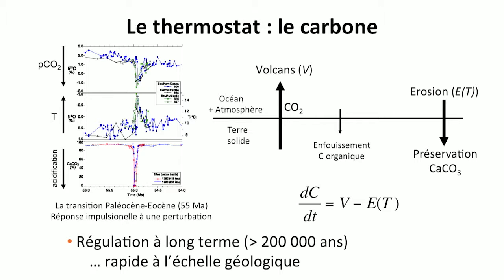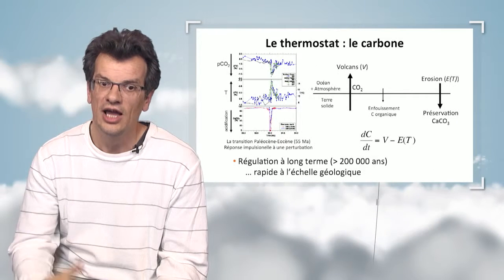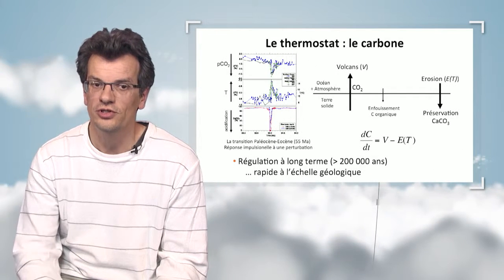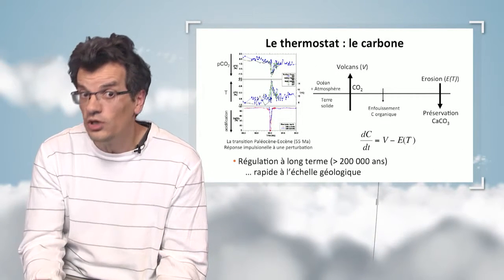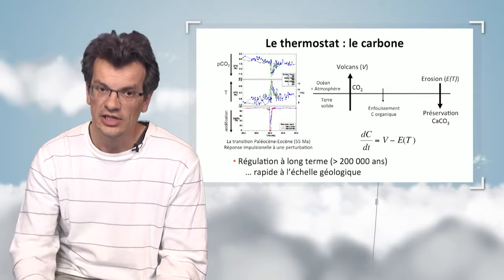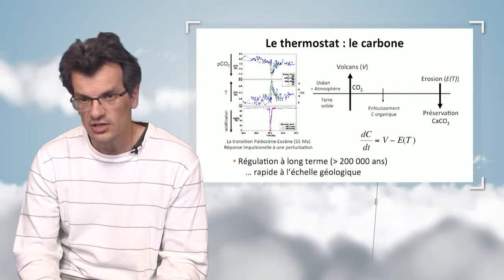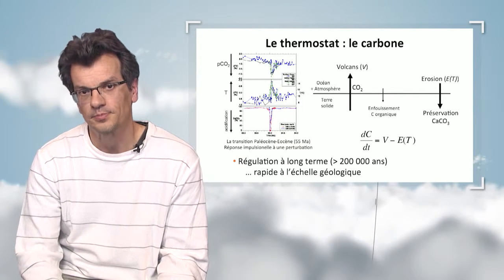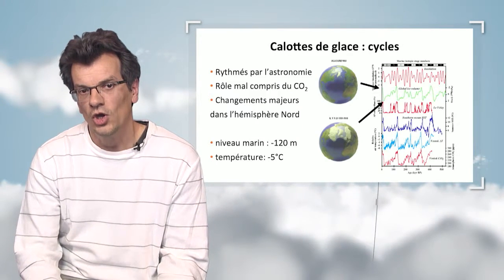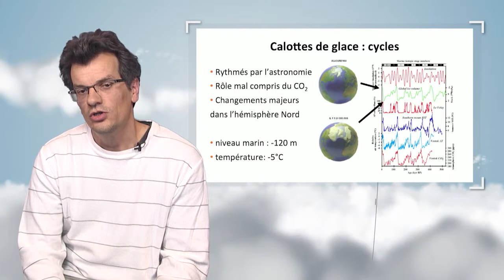Naturally, the carbon thermostat brought the Earth back to the initial stage in about 200,000 years. So there was a regulation, except that it took 200,000 years — a relatively short period if we consider the history of Earth, but a very long period if we consider our own history.